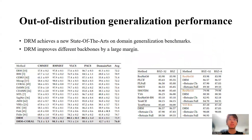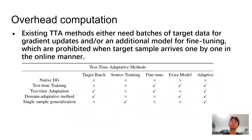Our results show that domain-specific risk minimization achieves a new state-of-the-art on domain generalization benchmarks, and can also improve different backbones by a large margin. Additionally, compared to existing test-time optimization methods that add extra batches of target data for gradient updates or an additional model for fine-tuning, our domain-specific risk minimization doesn't need any extra computation burden or extra models.